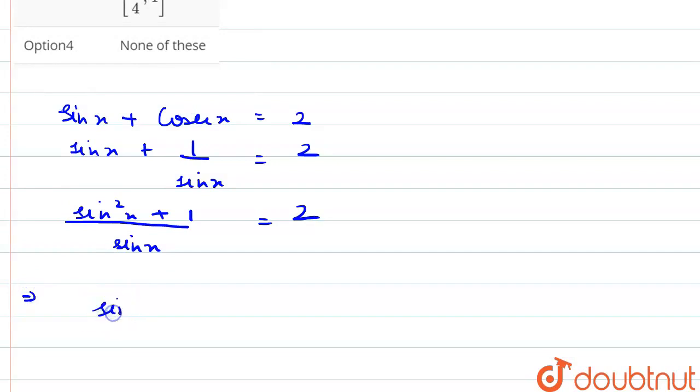Now, we can write this as sin square x plus 1 minus 2 sin x. First, I multiplied sin x with 2 and then I shifted it to the left side.